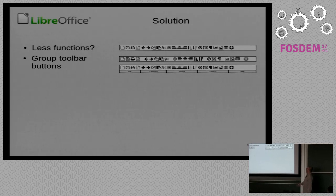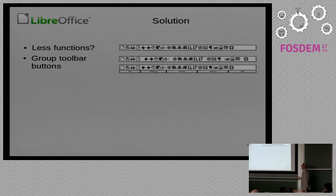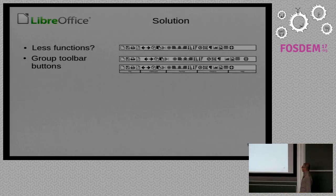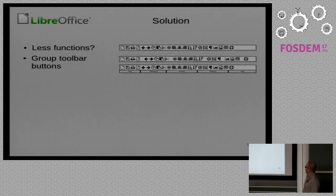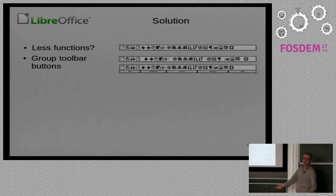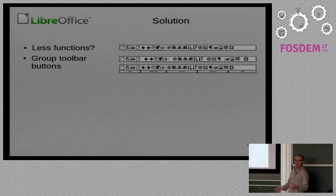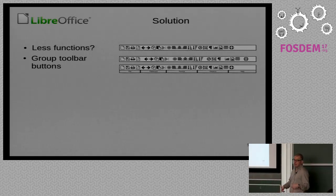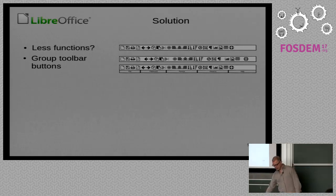You can of course also have labels under groups — it's not easy to read, but it writes 'file', 'clipboard', 'format', 'objects', and 'help'. Just an example. If you label the groups, it gives additional information for the users.